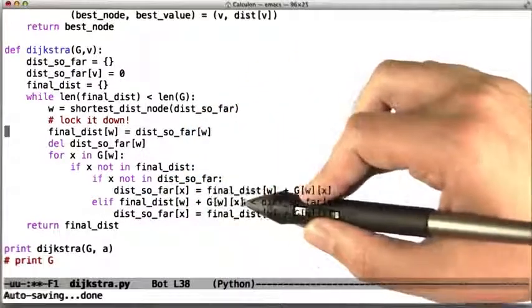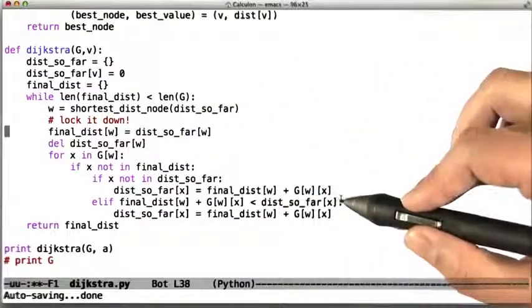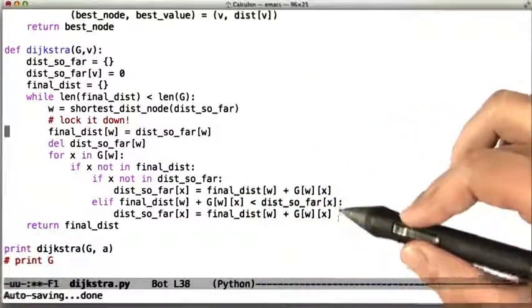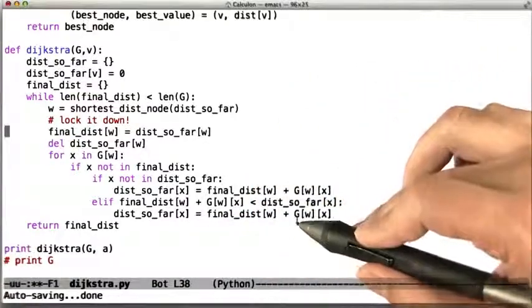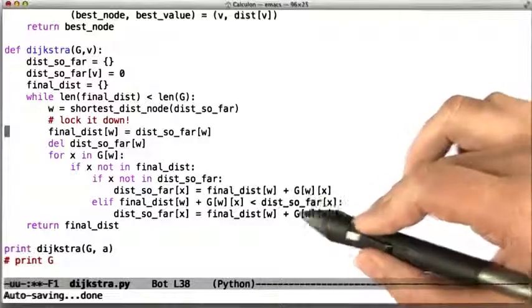On the other hand, if it already has a distance, check if the new distance, the distance to w plus the distance from w to x, is better than the distance that we had so far, and if it is, replace it. This is sometimes called relaxation. It doesn't seem very relaxing, but that's what it is.